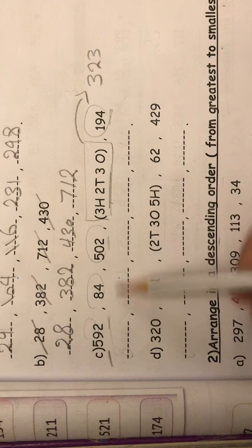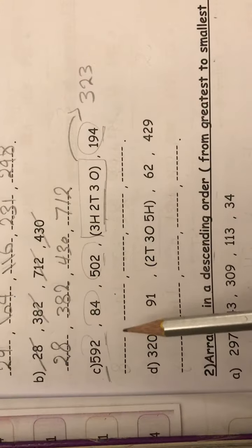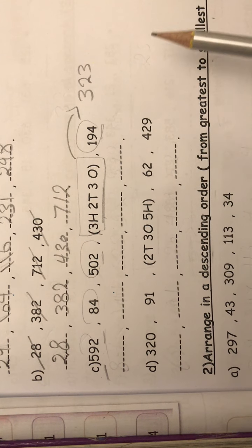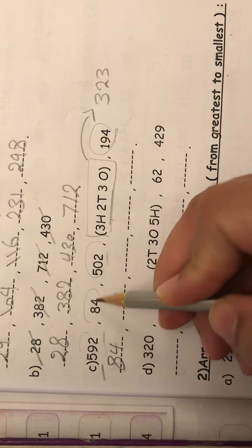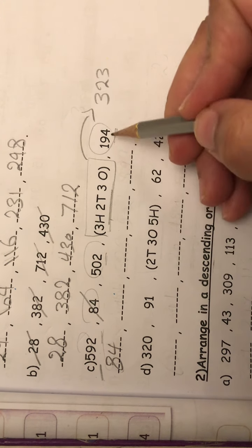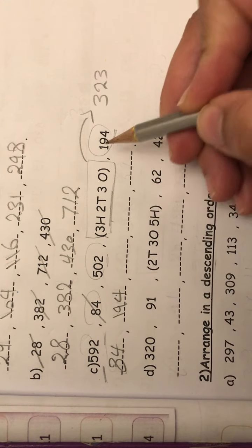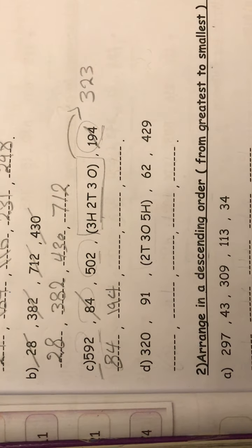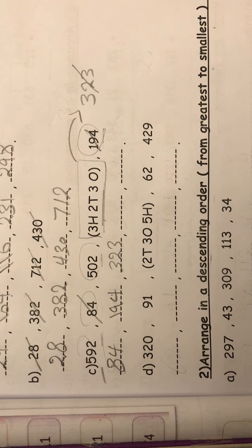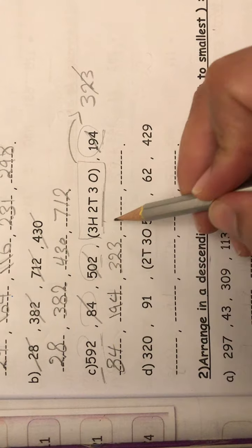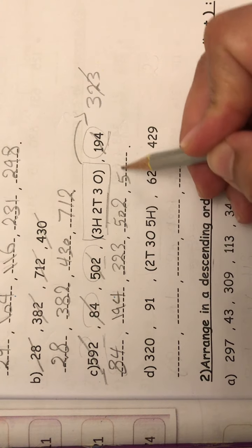So now I can compare or arrange, right? So here, I arrange from small to big. So I will start with 84. And next, 194. Next, excellent, 323. And after, 502. And last, 592.